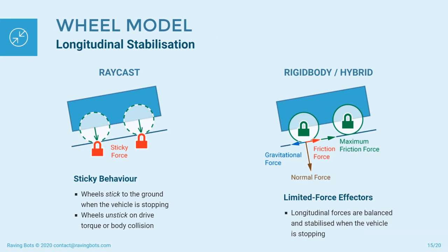Another challenge is the stabilization of a vehicle when it stops on a slope. Physics engines that execute in real-time do not store the record of all forces acting on an object, so you cannot easily calculate what amount of counterforce you need to apply to stop that object in place. If you put too little force, the object will drift; if you put too much force, the object will move in the opposite direction — that is how you get oscillations.